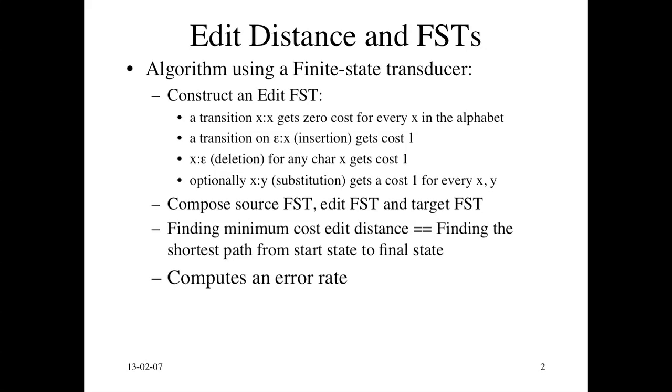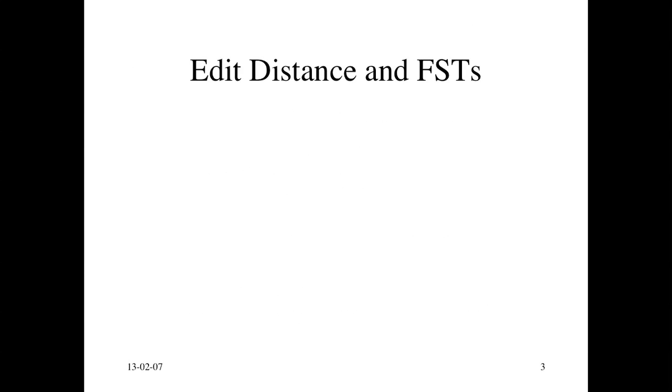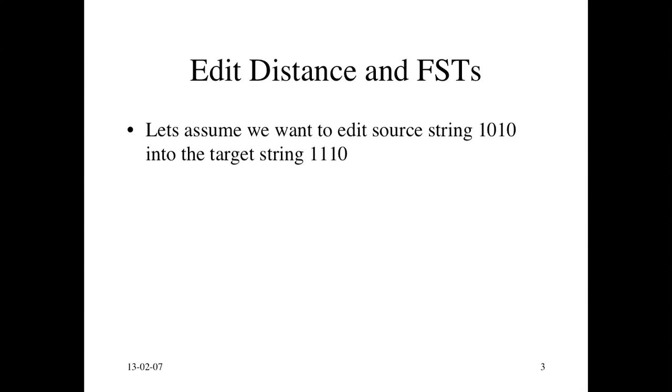And what this FST, this compose FST does, is computes an error rate. So what is the error of looking at a source and then matching it to a target? For words, this computes the word error rate. For letters, this is the letter error rate. Let's look at an example. Let's say we wanted to map a binary string 1010 into the target string 1110. In this case the alphabet is just the bits 1 and 0. And I chose this small alphabet for a reason.